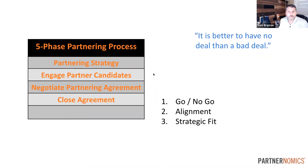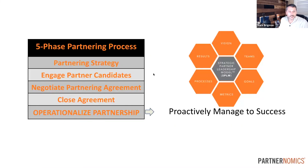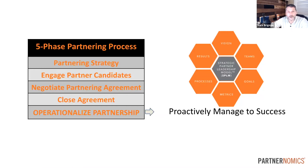The finish line isn't getting the deal signed. The finish line comes years and years down the road when both parties are extracting the value from it. Phase five: we've got to operationalize that partnership and proactively manage it. Not all partnerships are created equal — some can be pretty transactional by nature, pretty easy to manage, not a lot of moving parts. Then we have the opposite end of the spectrum: truly strategic partnerships with a lot of innovation, a lot of moving parts, building the ship as we sail it.